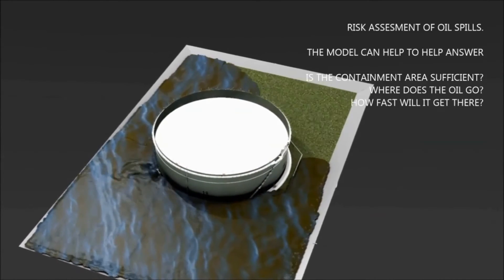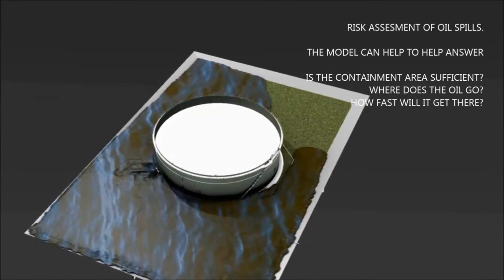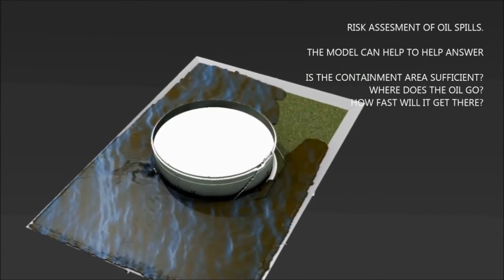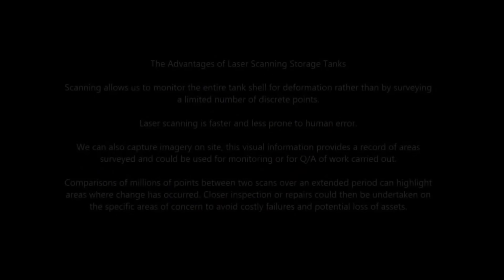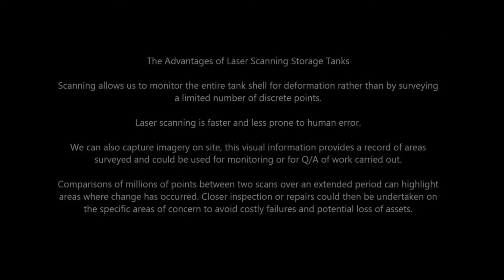Failures such as the one depicted here tend to be sudden events. The 3D model can provide information about the complexity of the terrain and therefore allow for the mapping of the path and speed of the oil spill.